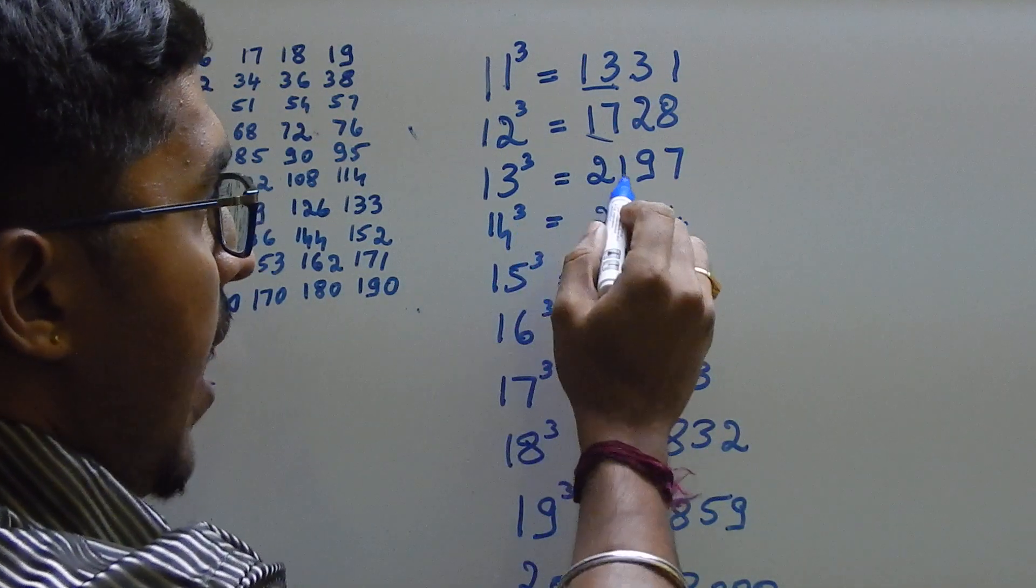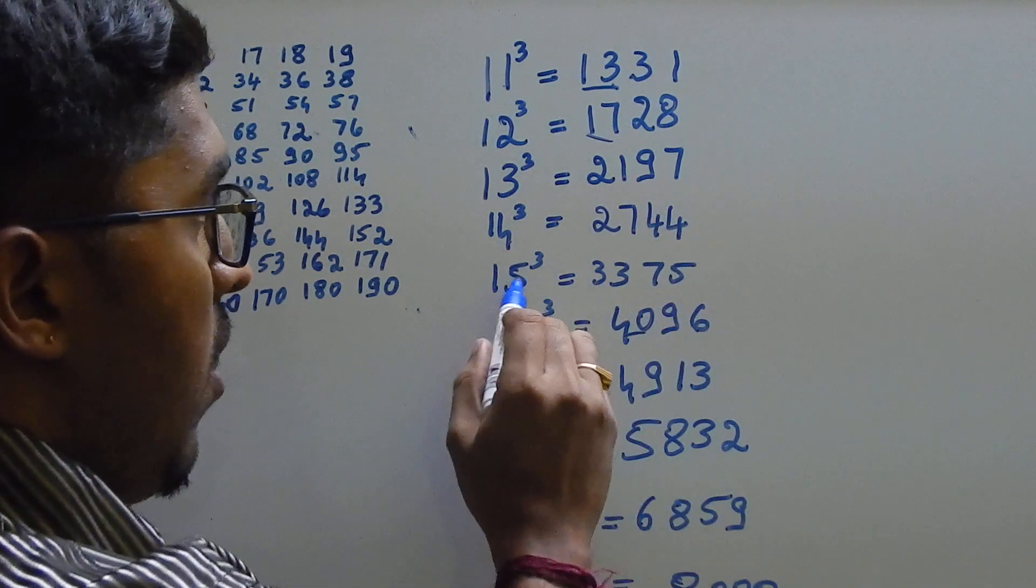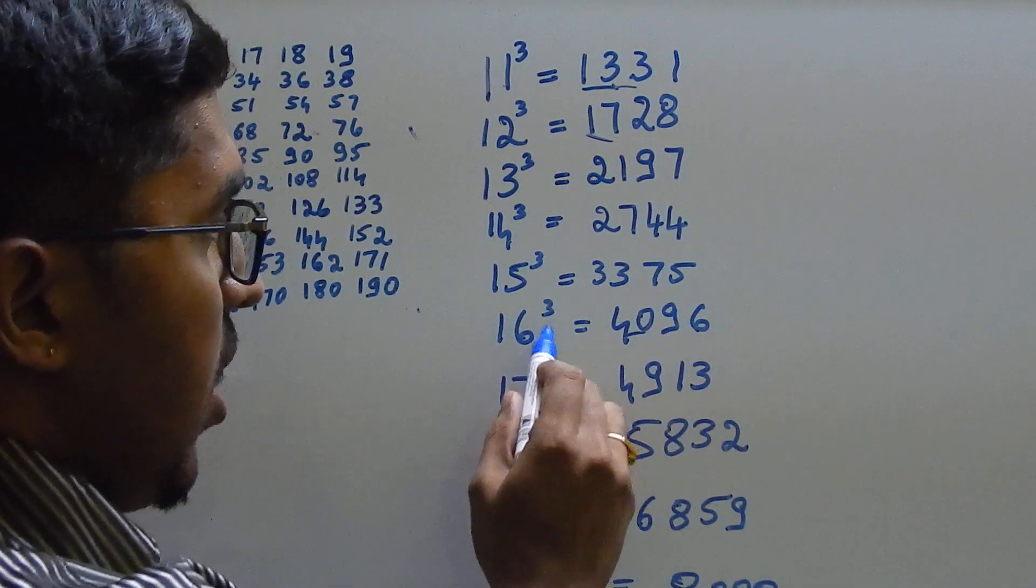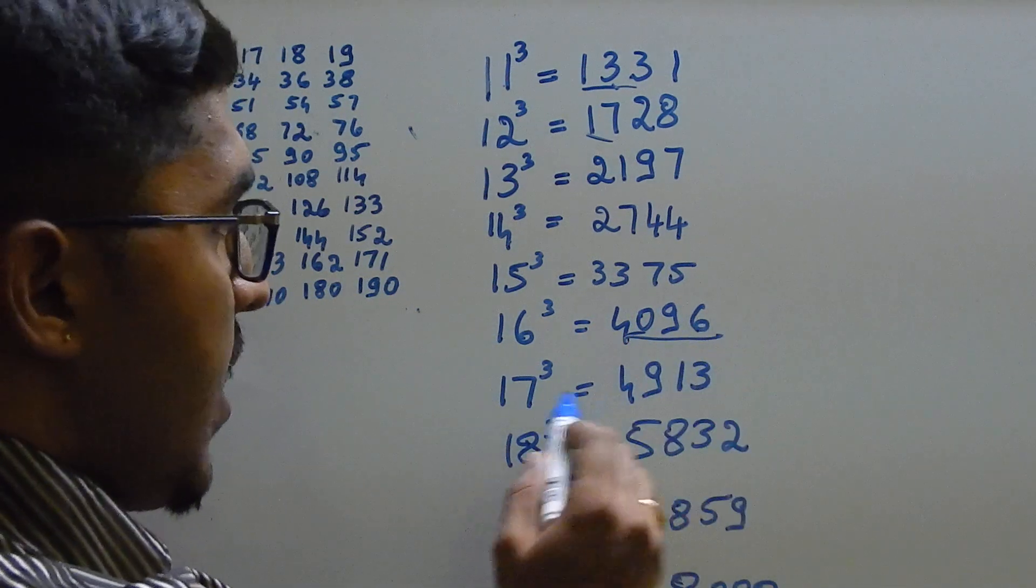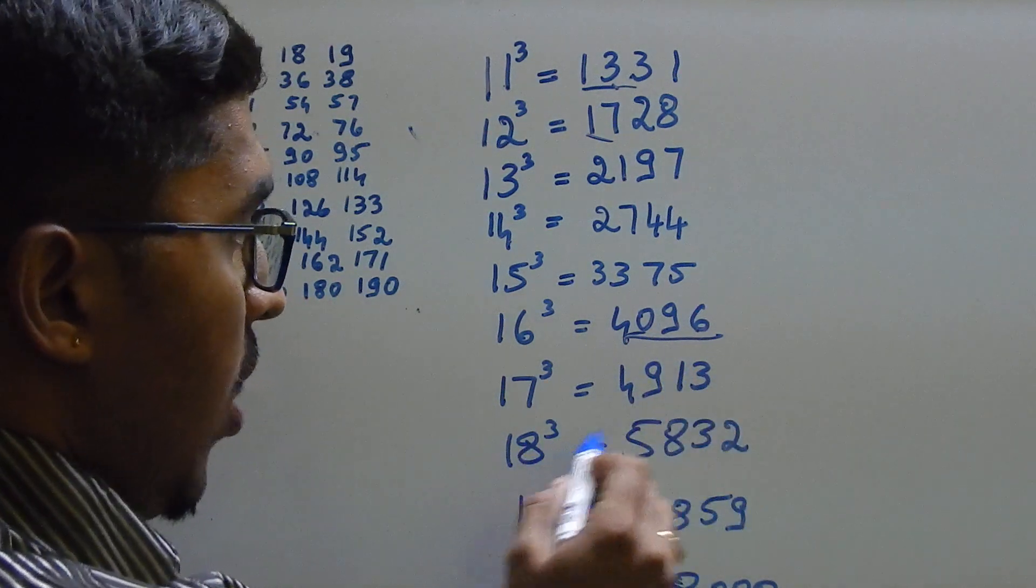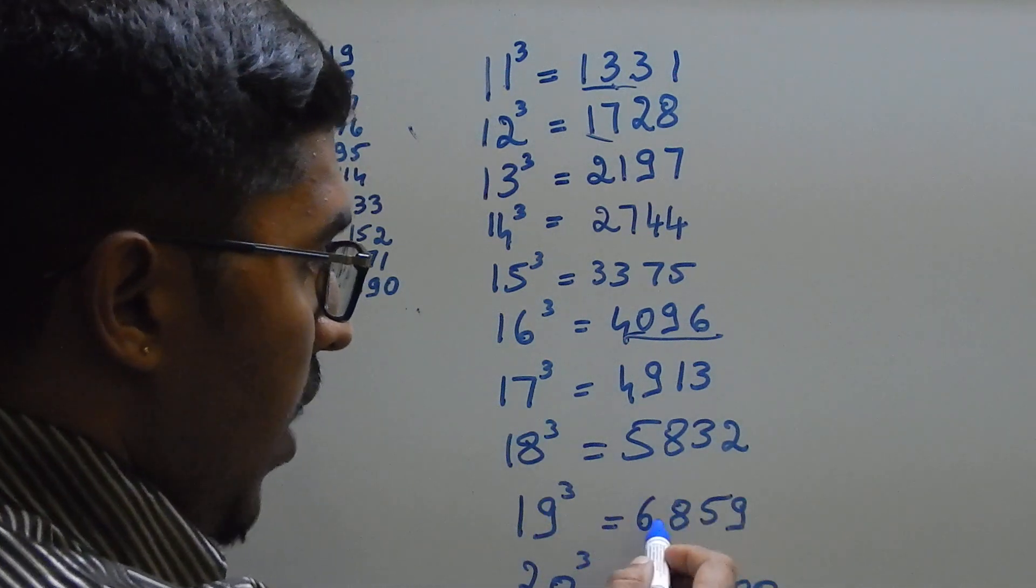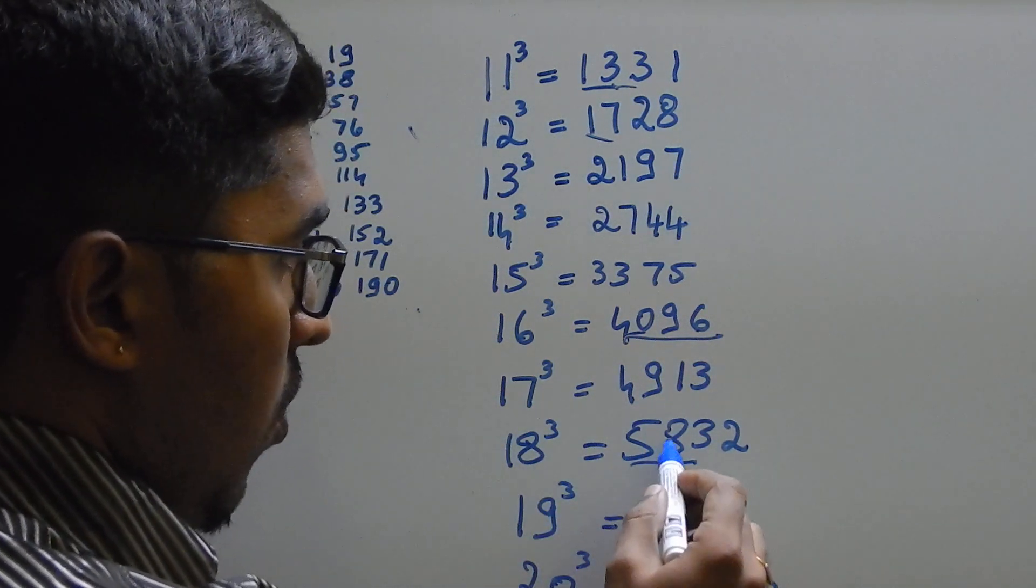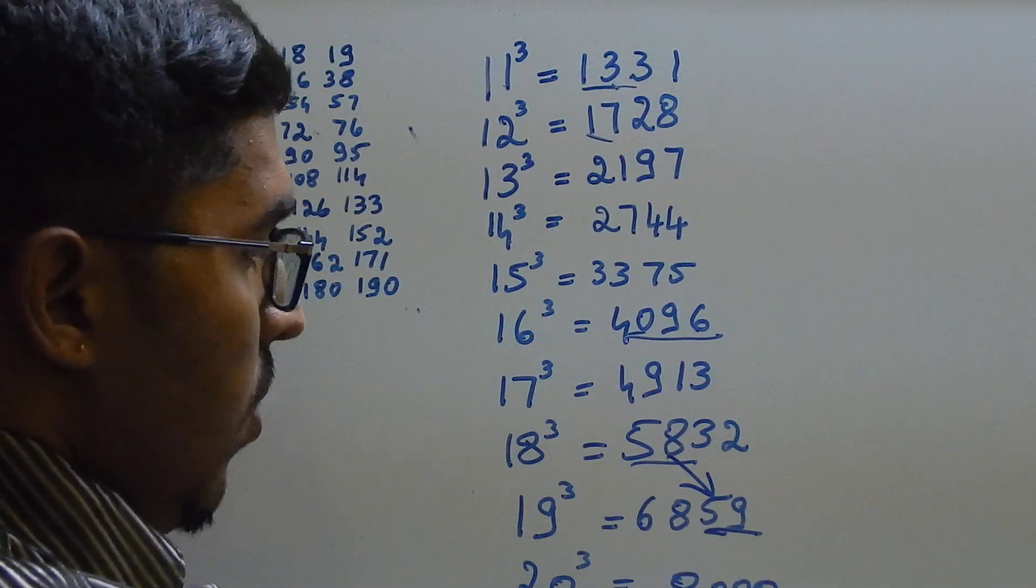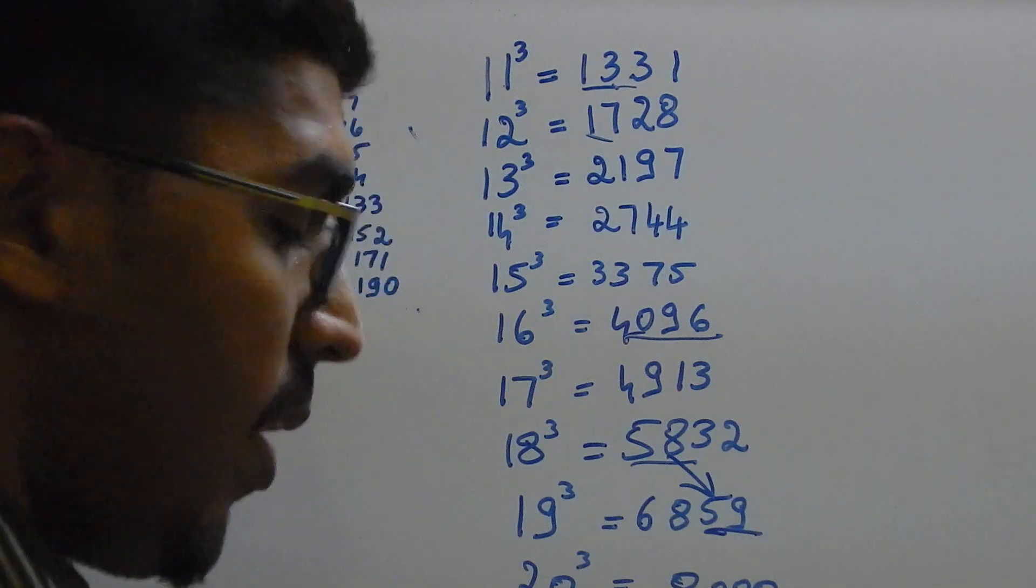14 cube. Add 6 to 21. 27. Next, here 4. So, 44. 15 cube. 33 is here. 3375. 16 cube. It is a famous number. 4096. 17 cube. Add 9 to 40. 49, 13. 18 cube. Add 9 to 49. 58, 32. Then, 19 cube. Add 10 to 58. 68. And add 1 to 58. It becomes 59. So, 20 cube is 8000. So, we learnt from 1 cube to 20 cube.